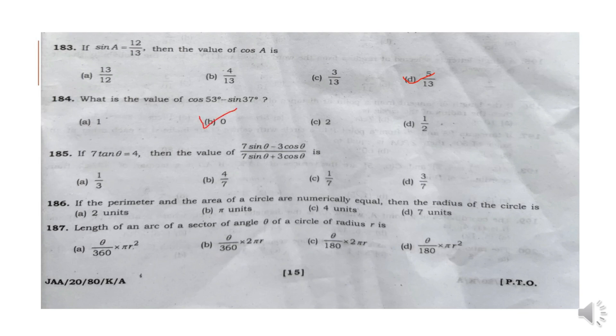Question 185: If 7 tan theta is equal to 4, then the value of the expression is 1 by 7. Option C.